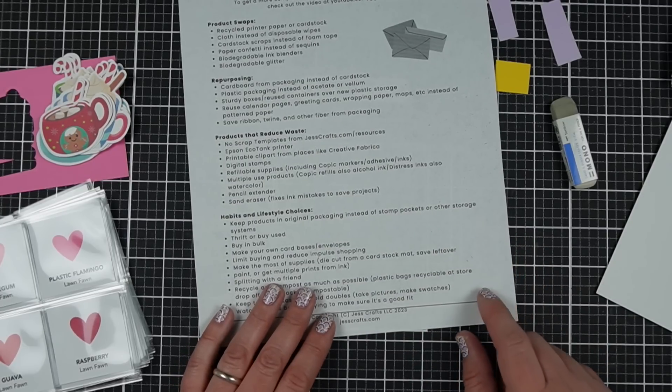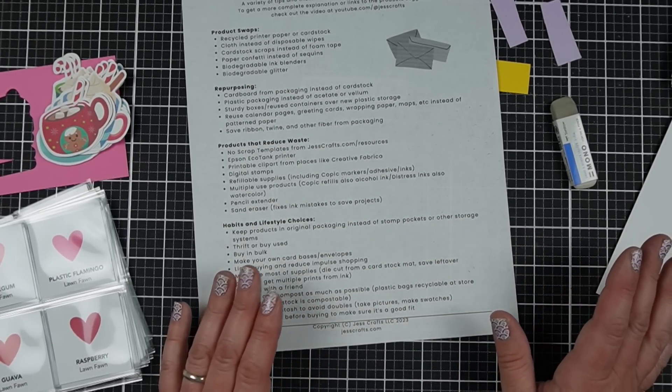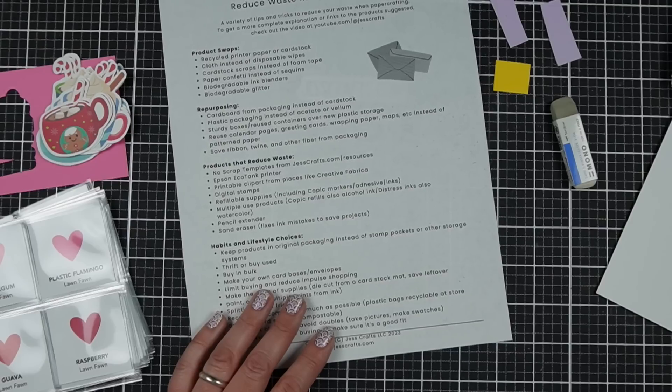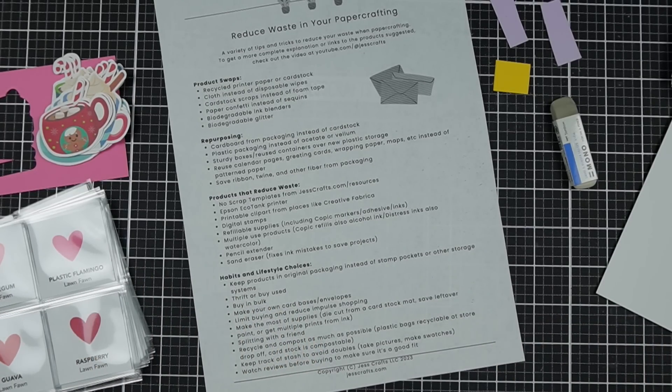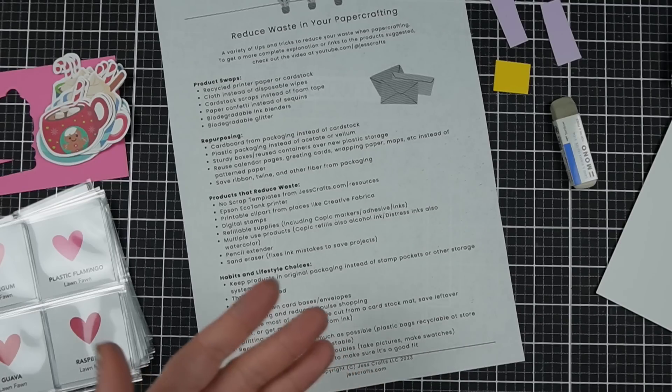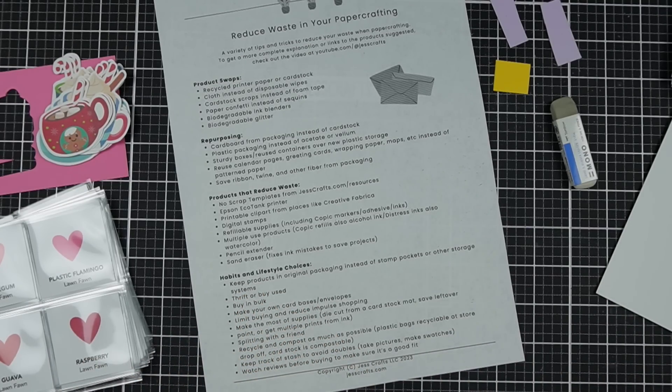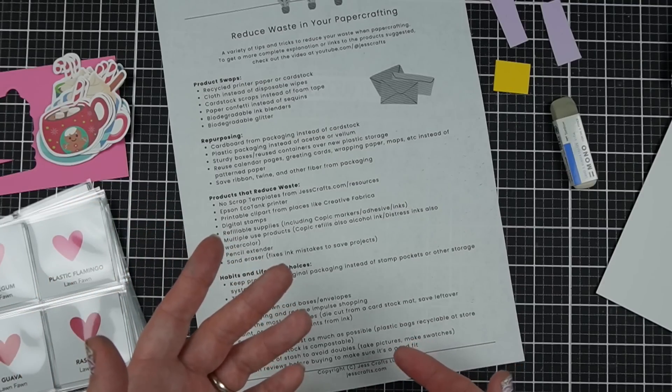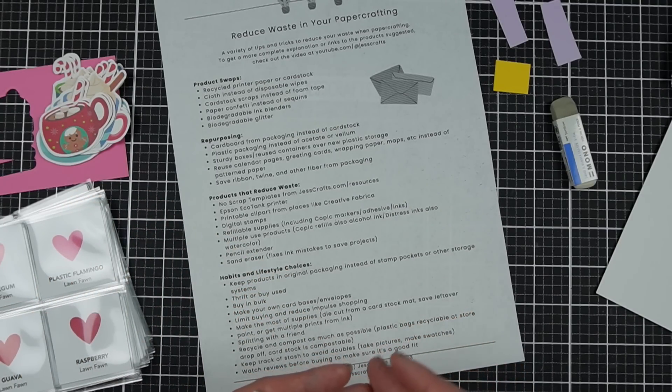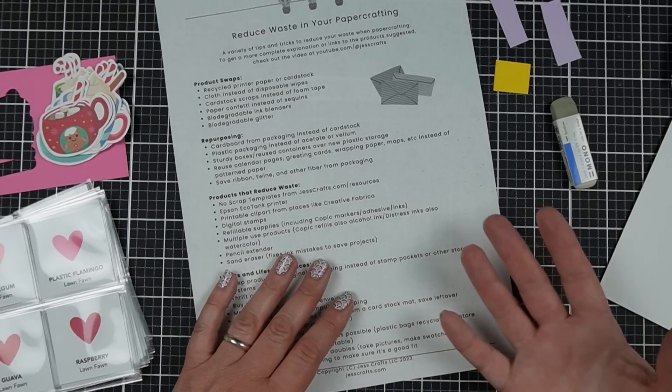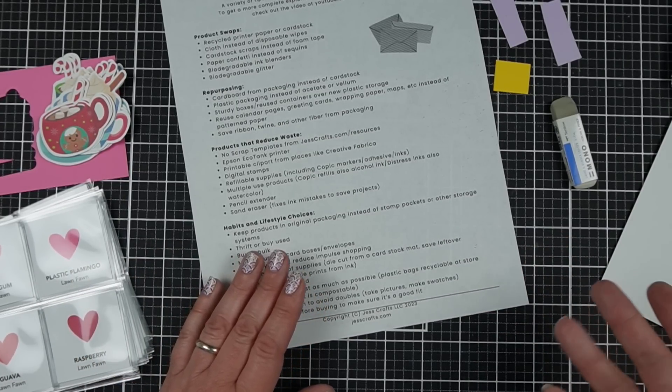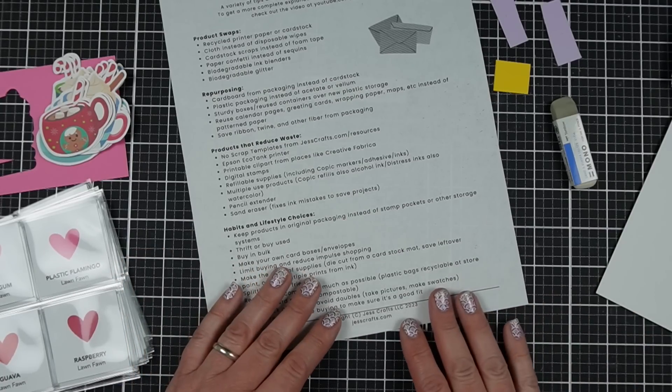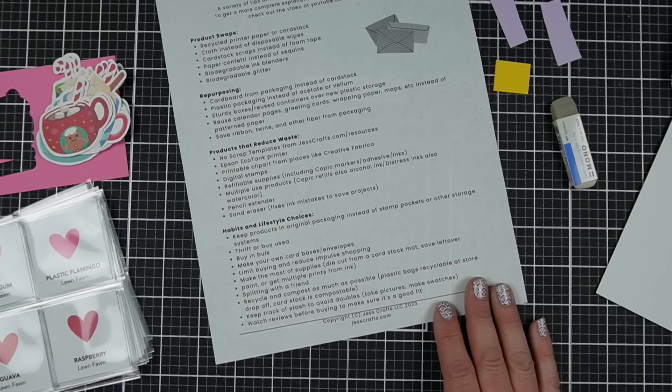Thrift or buying used. I wish I could buy more things thrifted, but like I mentioned, I found my page protectors thrifted. I find a lot of office products thrifted, but you can, I have found lawn fawn stamp sets in my thrift store. I know that sounds crazy, but there also are arts and crafts reuse centers. And I will link a few in the video description where they specifically collect arts and crafts supplies. And so you can go there and have better success than you might at a random thrift store. But thinking about what kinds of products like printer paper or something like that, that you could get, or maybe even adhesive or glue.